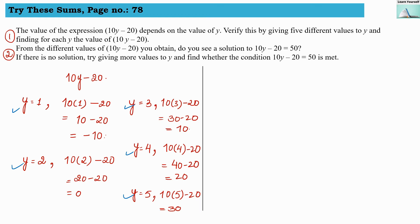From these different values of 10y minus 20, do you see a solution that gives us 10y minus 20 equals to 50? Did we get this? No. We took values up to y equals to 5 and we did not get the answer 50 — we got only up to 30. So if we take further values of y, we may get the answer 50. If there is no solution, try giving more values to y and find out whether the condition is met or not.